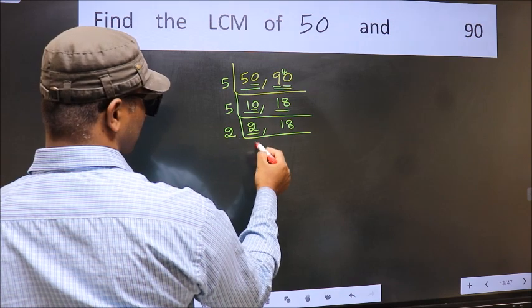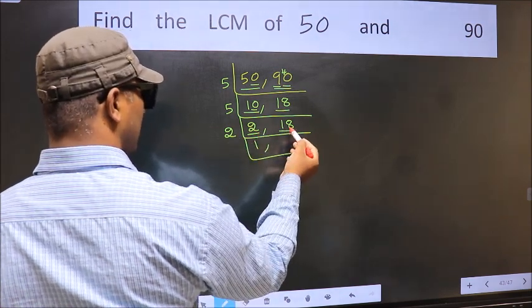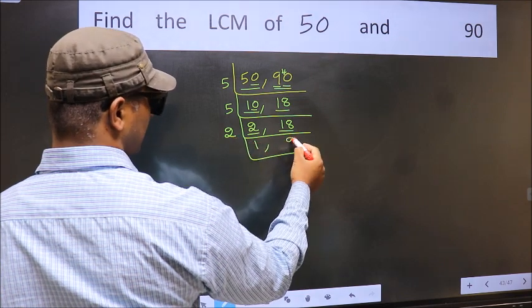Now here we have 2. 2 is a prime number, so 2 ones 2. The other number 18. When do we get 18 in 2 table? 2 nines 18.